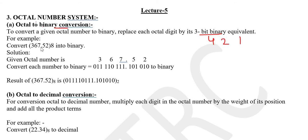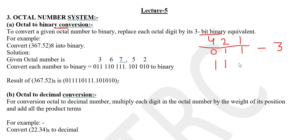For example, take the number 367.52. Using the 4-2-1 code: for 3, we write the 3-bit binary. For 6, we write it as 4 plus 2, giving 110. For 7, we write 4-2-1, so 111 equals 7.